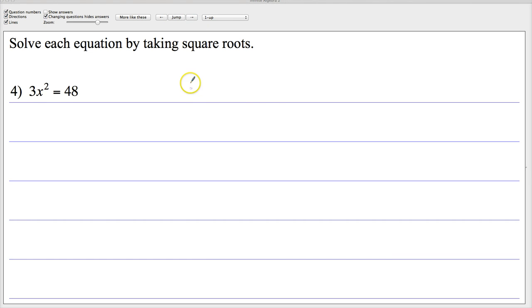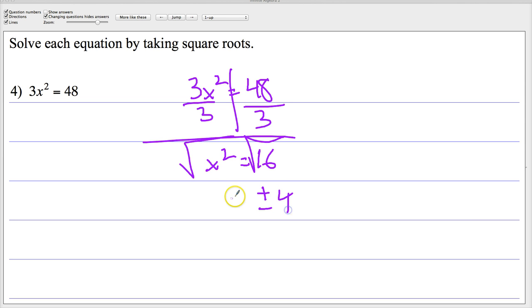3x squared equals 48. This is basically the same thing. Divide by 3. 48 divided by 3 is 16. This one comes out nice and easy because I take square root and I get plus or minus 4. Let's look at one that's more difficult.